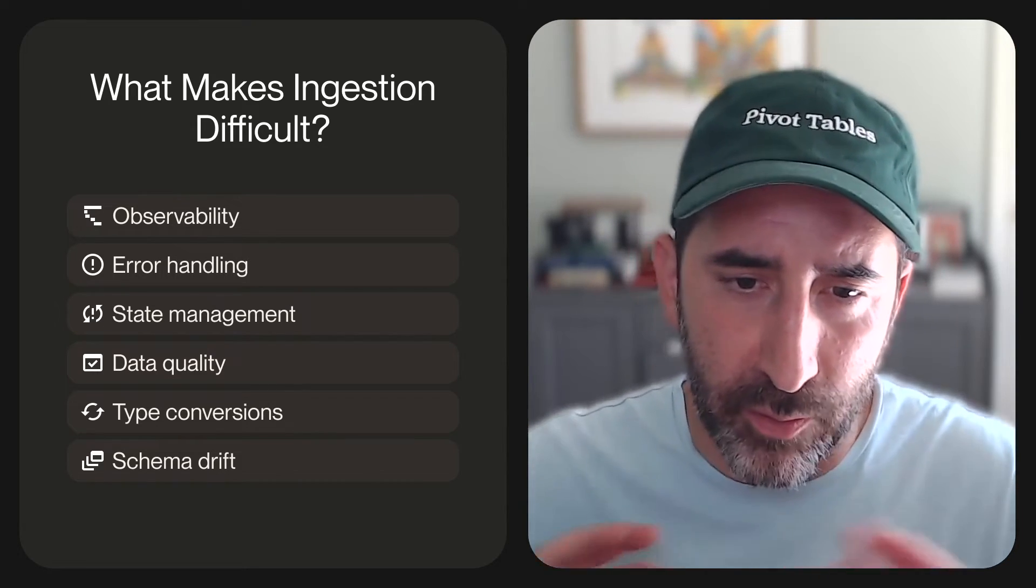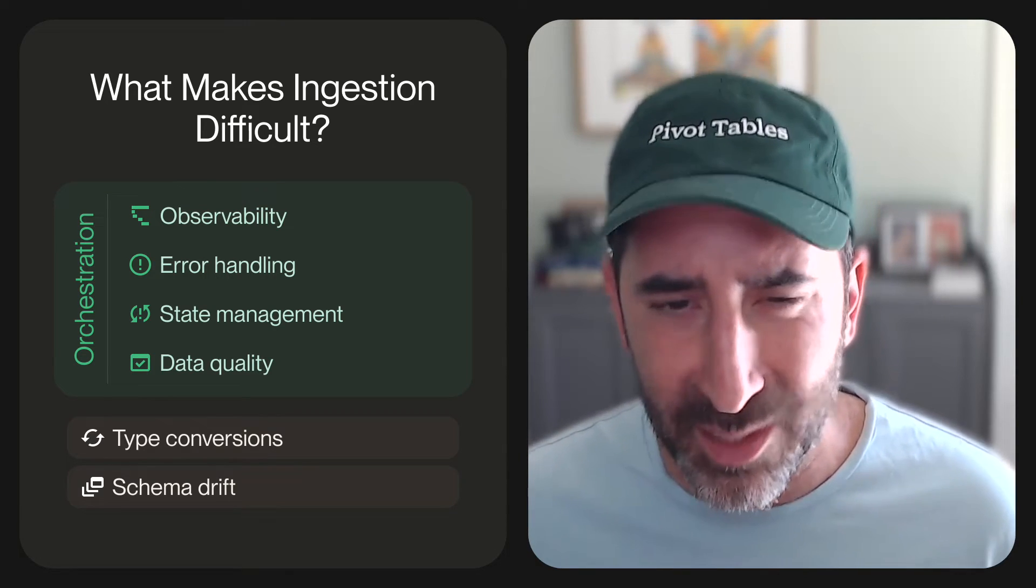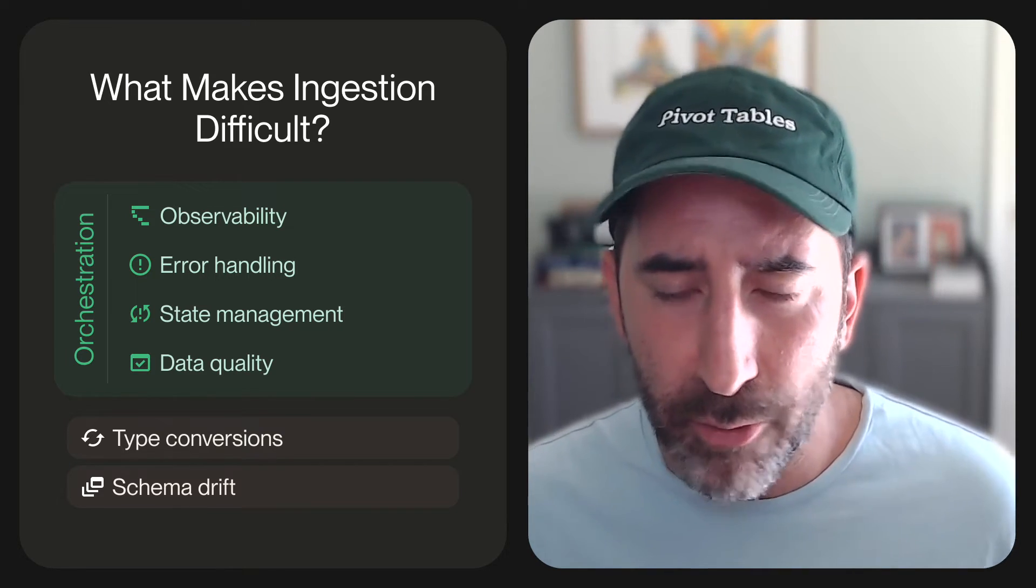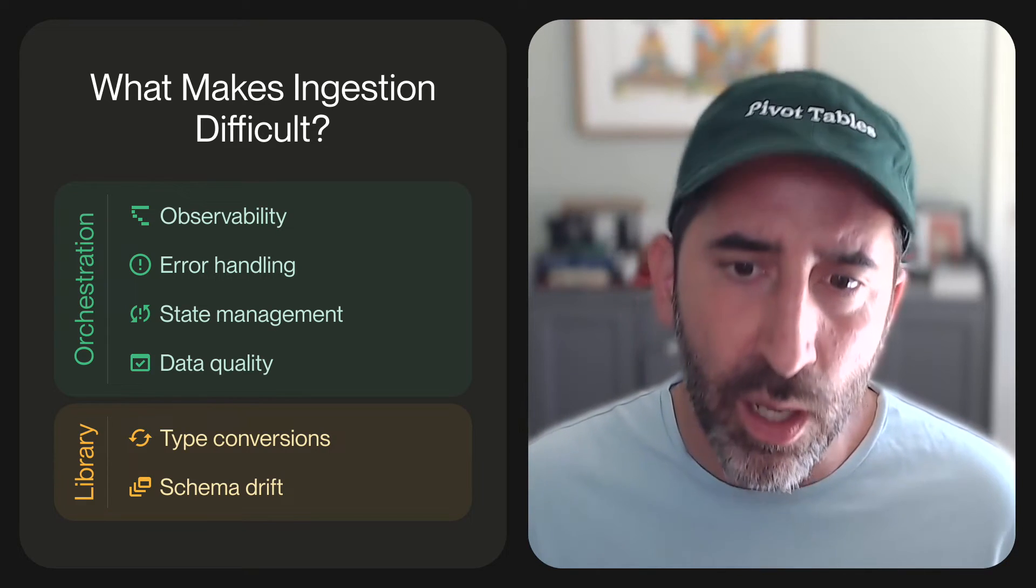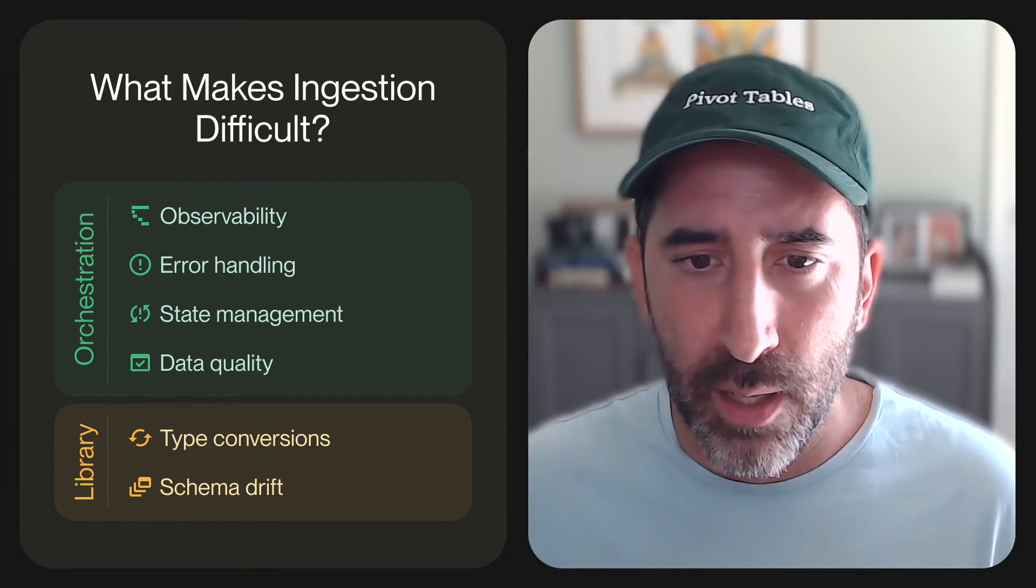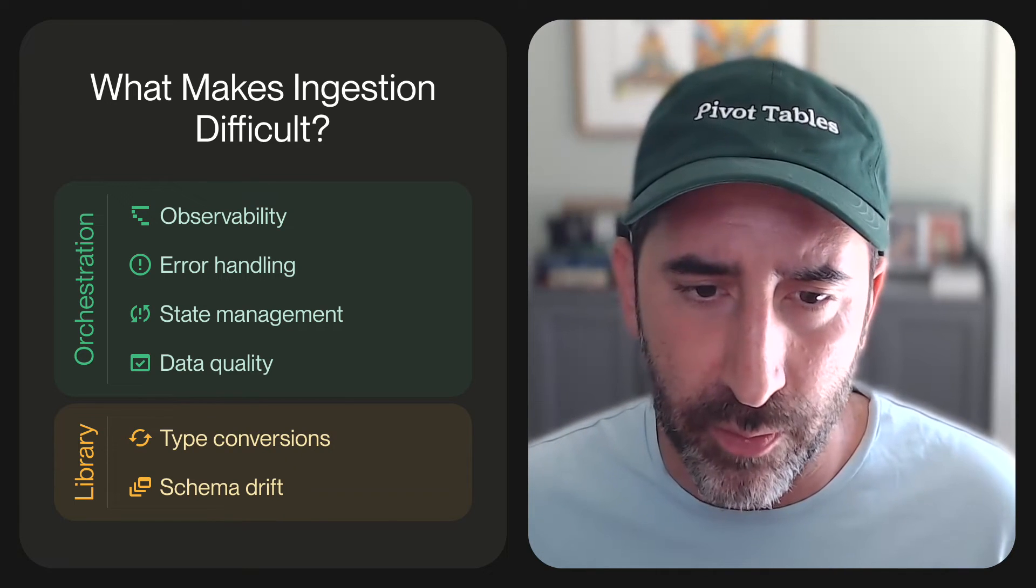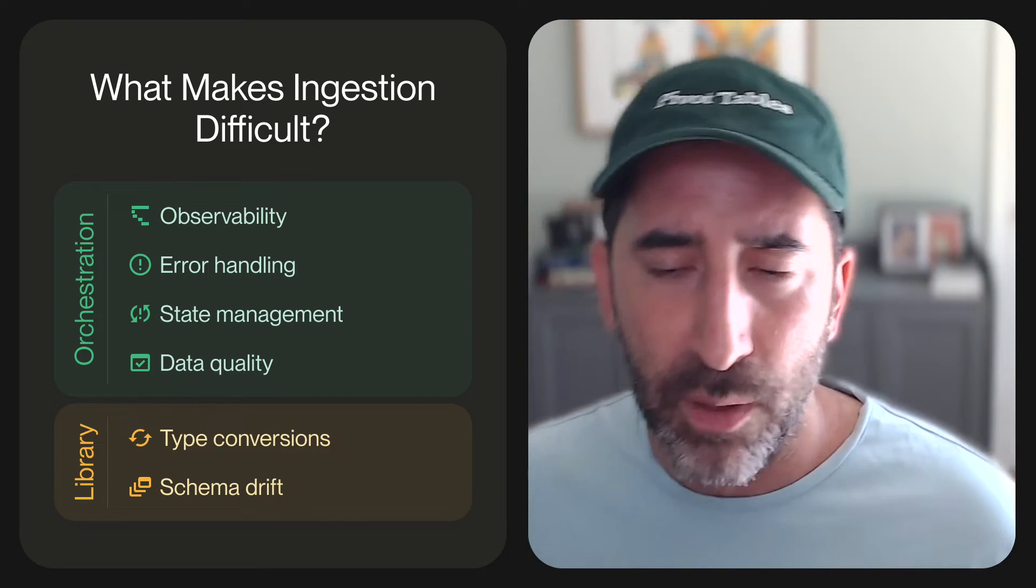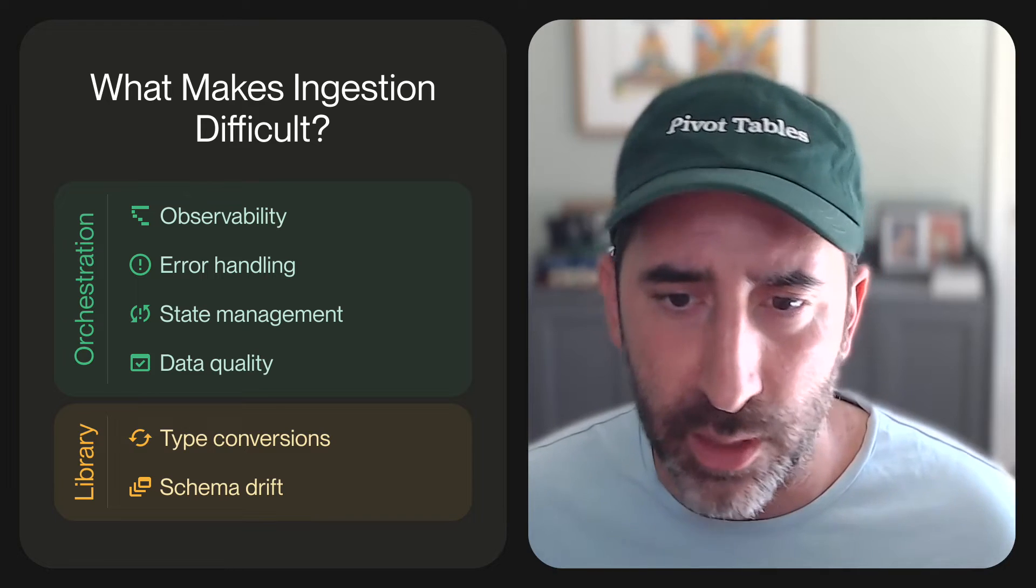When you look at it, there's really two types of categories about these concerns. On the first side, we have orchestration concerns: observability, error handling, state management, data quality. These are things traditionally an orchestrator solves. On the other side, we have type conversion and schema drift. These are things that are really well handled by some ELT libraries. The question is, do we have to have all of these things in one place? We absolutely need all of these things, and because of that, we've seen tools like Meltano and Airbyte package everything together. But then we end up with that mess where we now have 11 services to monitor just to manage data transfers. On the flip side, if we go with some of these smaller tools, they handle the library concerns really well, but we're still without the orchestration concerns. Managing data quality and observability can be quite tricky with just a small library.